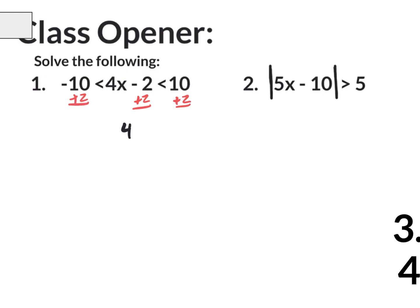So what I have here in the middle is a 4x. On the left side, I have a negative 8. On the right side, I have 12. And those less than symbols just come straight down — less than, less than. And now for my final step, I really have a 4 times x. To get rid of that multiplication of 4, I'm going to do the opposite of multiplying by 4, which is dividing by 4. And what I do to the middle, I do to both outside sides.